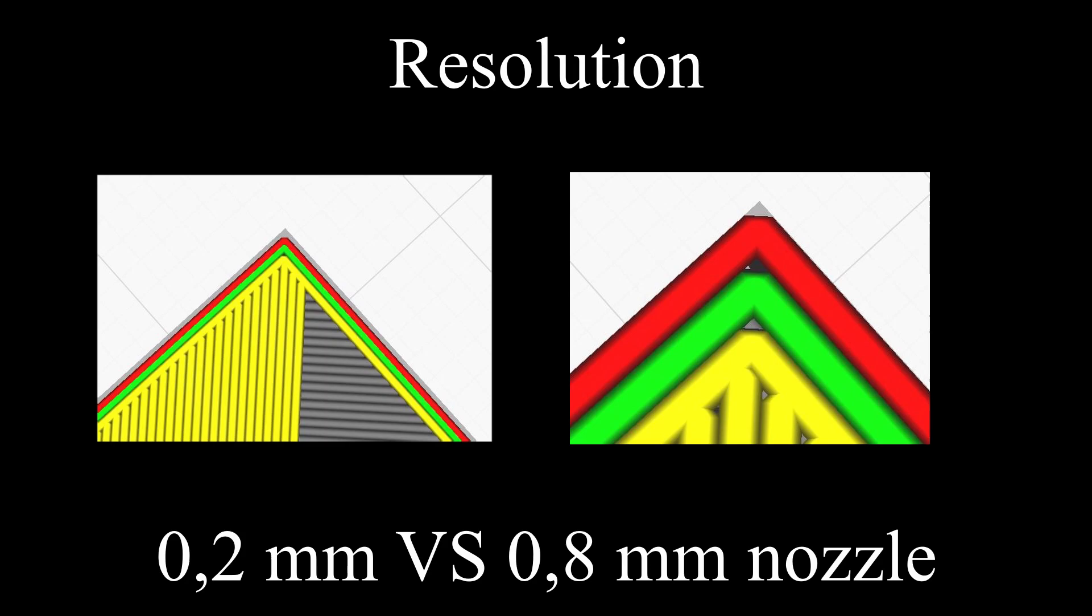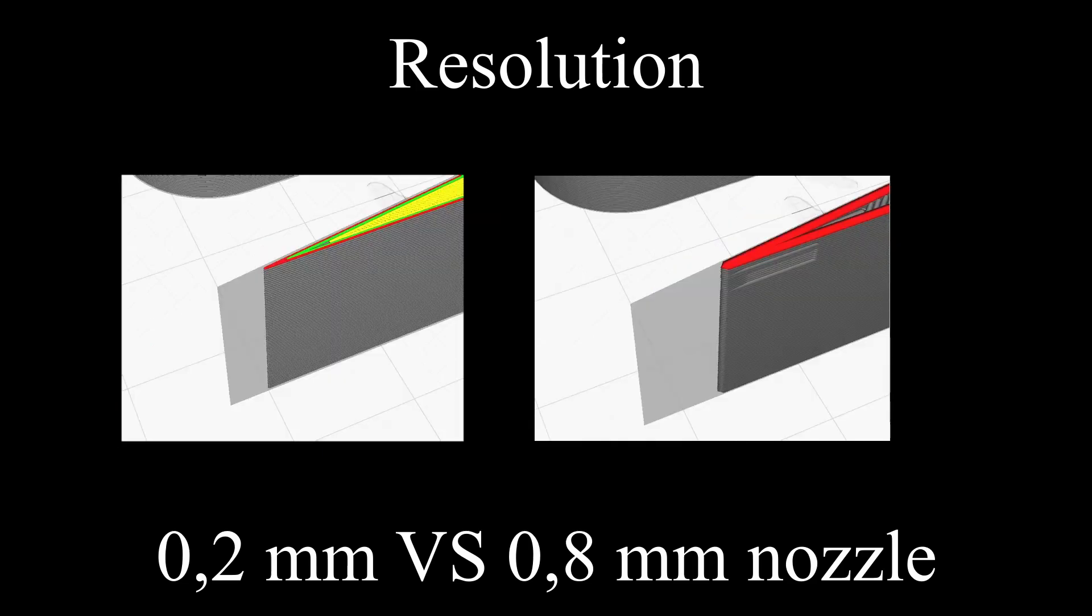Let's have a look in the slicer and compare. As you can see, the 0.2mm nozzle creates a sharper corner than the 0.8. As a result, the details on your print will be less with a larger nozzle.